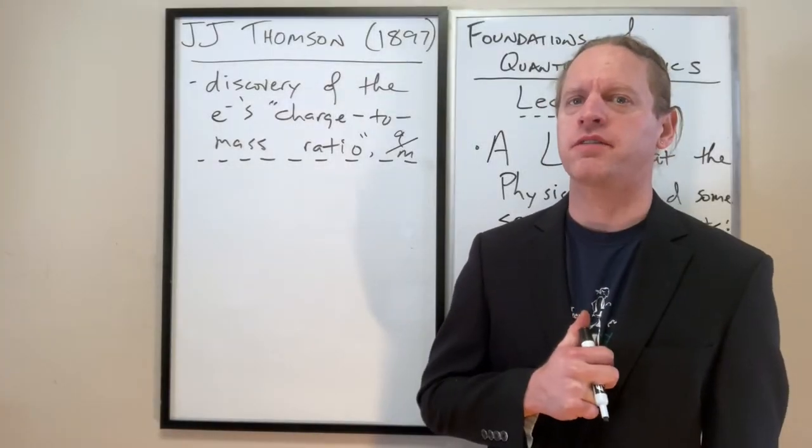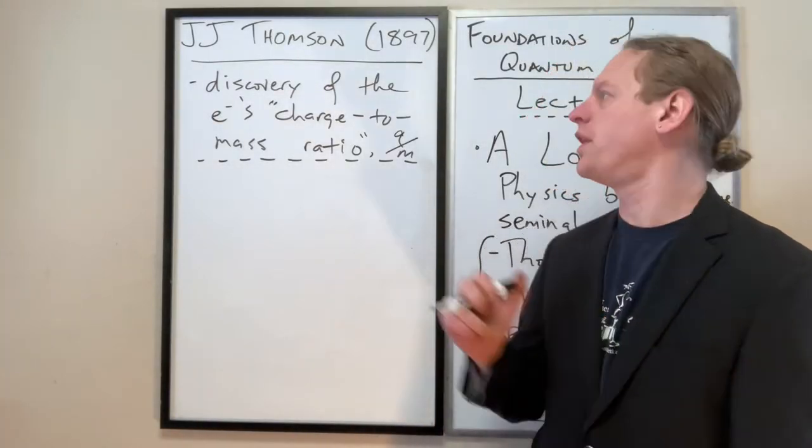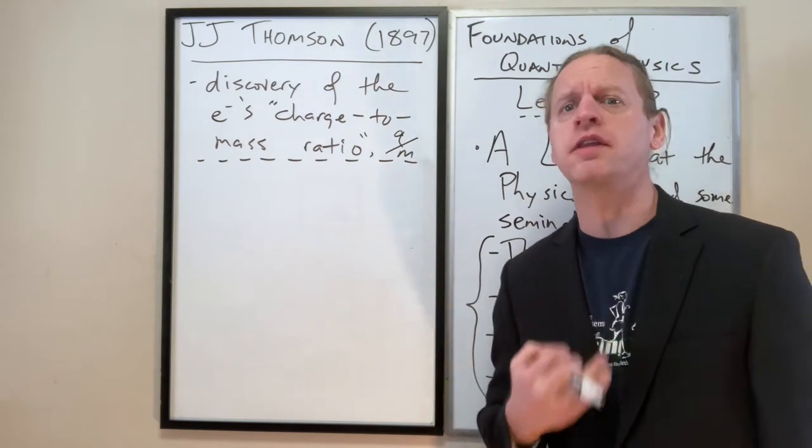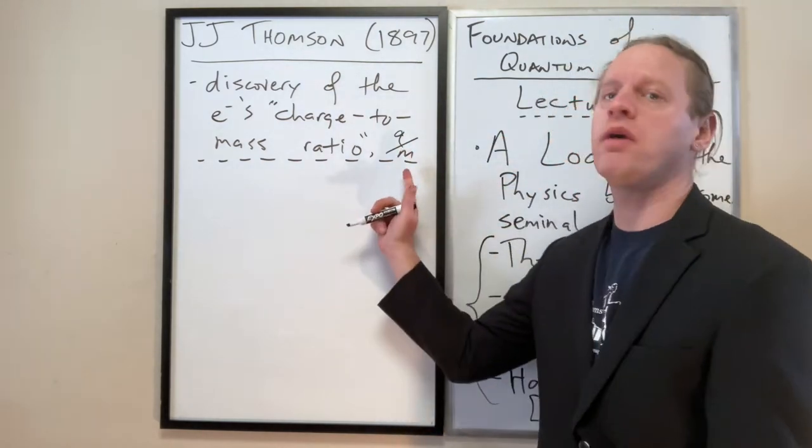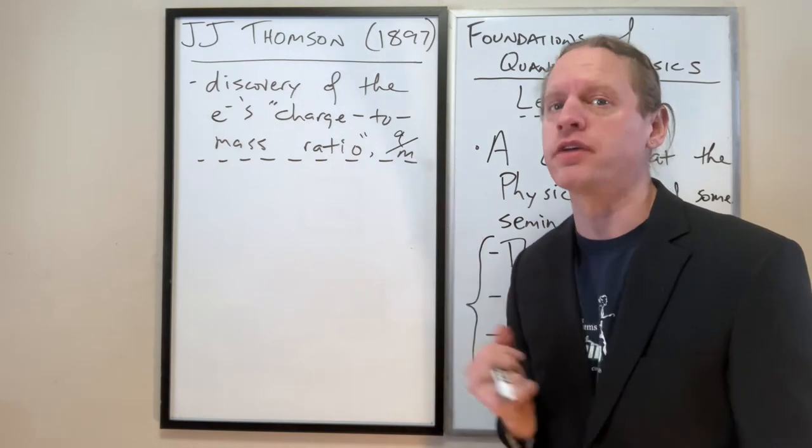All right, let's start off with Thompson's experiment. If you recall, J.J. Thompson was the one that basically discovered the charge-to-mass ratio of the electron, which we'll write as Q over M, or Q sub E over M sub E.